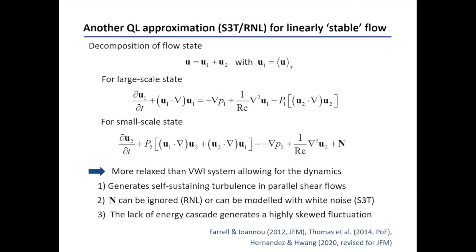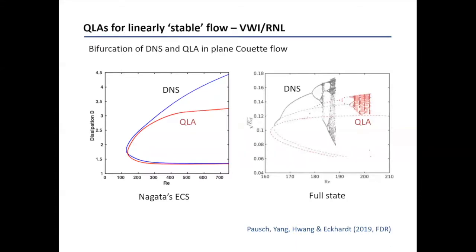All these approximations have no data in them. I'm going to show how bad the quadrilinear approximation is when you don't have any data. This is the bifurcation diagram, showing one of the nonlinear solutions of Couette flow first reported by Masato Nagata in 1990. Here is the Reynolds number of the plane Couette flow and this is the dissipation. The DNS solution shows a non-negligible deviation from the data coming from the quadrilinear approximation, although in some regions the quadrilinear approximation does a really great job.